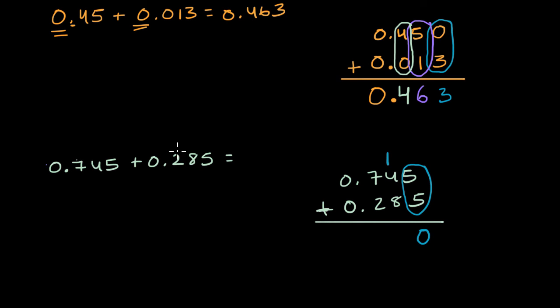So now we go to the hundredths place. One hundredth plus four hundredths plus eight hundredths. One plus four plus eight is 13 hundredths. 13 hundredths is the same thing as three hundredths and one-tenth. We regrouped that one-tenth or that 10 hundredths as one-tenth. And then we go to the tenths place.